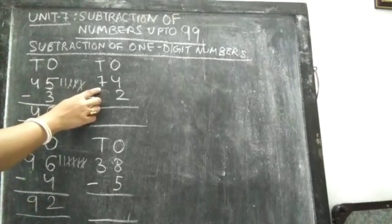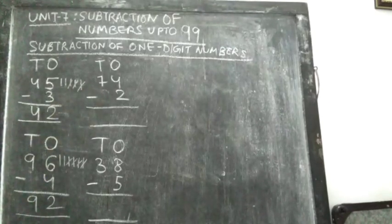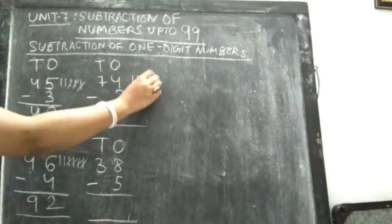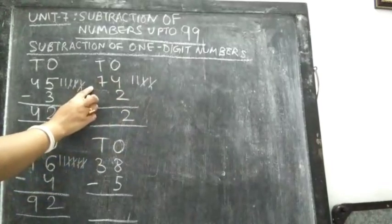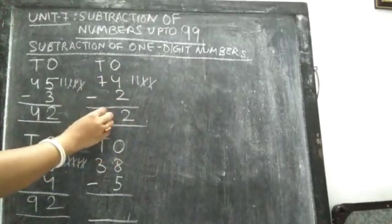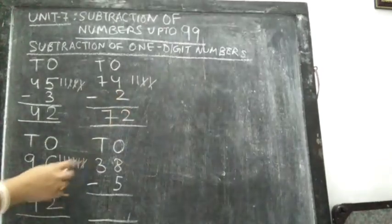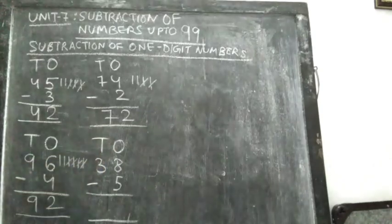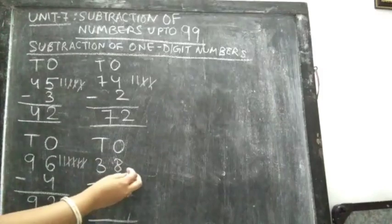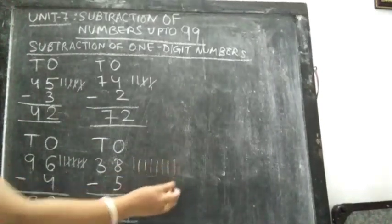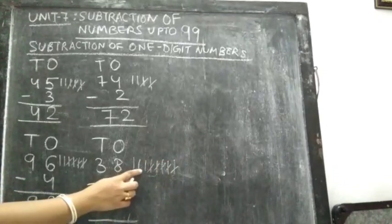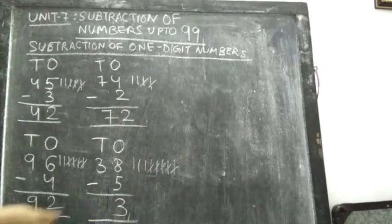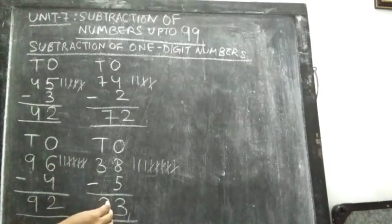Now see the next one: 74 minus 2. Ones column — draw 4 lines: 1, 2, 3, 4. Then cut down 2: 1, 2. How many are left? 2. So write 2. In the 10s column, only one number is there, nothing to subtract — simply copy and paste, write 7. Next: 38 minus 5. Ones column, 8 minus 5 — draw 8 lines: 1 through 8. Cut down 5: 1, 2, 3, 4, 5. How many are left? 3. Write 3. In the 10s column, only one number is there, nothing to subtract — simply copy and paste and write 3 in the 10s column.